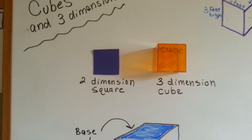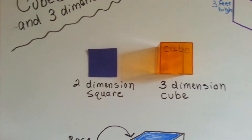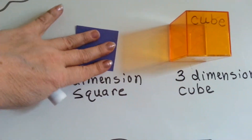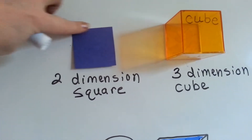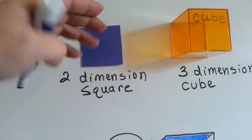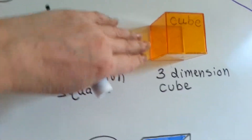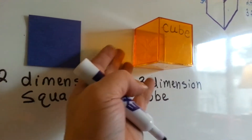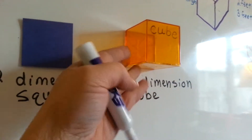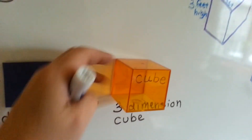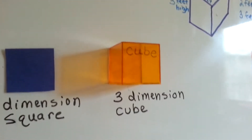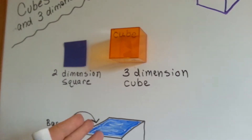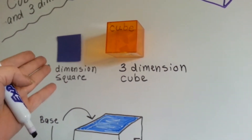We talked about 3 dimension and 2 dimension in a previous video. 2 dimension is flat. It has no height to it — it's got a width and a length, but no height. This 3D cube has height. See, it's casting a shadow and sticking out from the side of my board. You can see all the sides of it — that's 3 dimensions. A chair or a table is 3 dimensions. A piece of paper is 2 dimensions — it's flat.